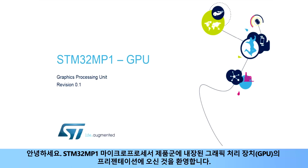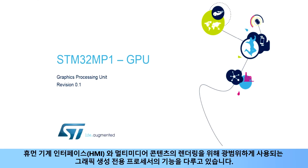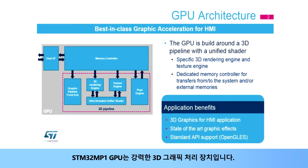Hello and welcome to this presentation of the Graphics Processing Unit or GPU embedded in the STM32MP1 microprocessor family. It covers the features of this processor dedicated to graphics creation, which is widely used for the rendering of human-machine interface or HMI and multimedia content.